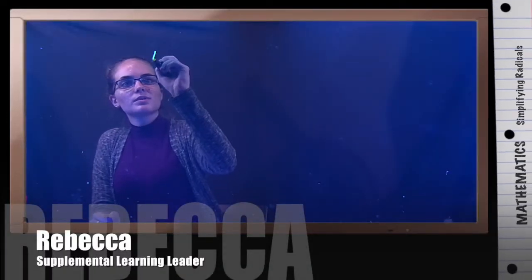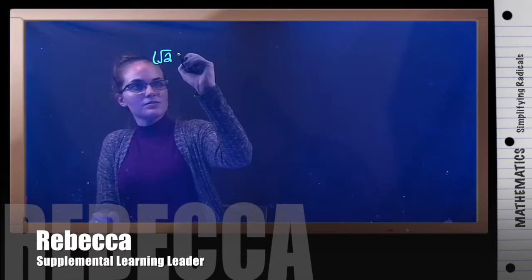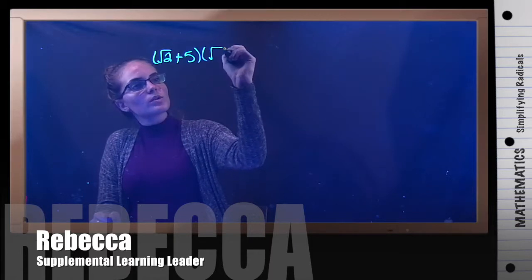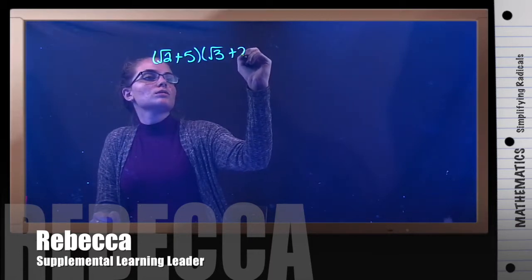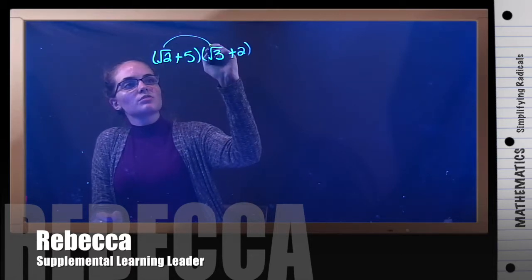For this example we're going to multiply the square root of 2 plus 5 times the square root of 3 plus 2. Now to multiply these we have to use distributive property.